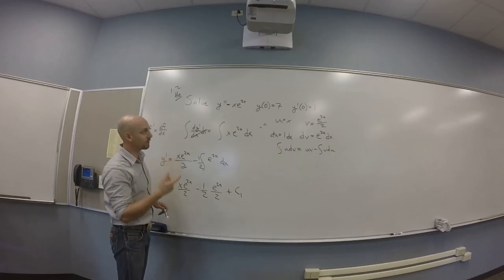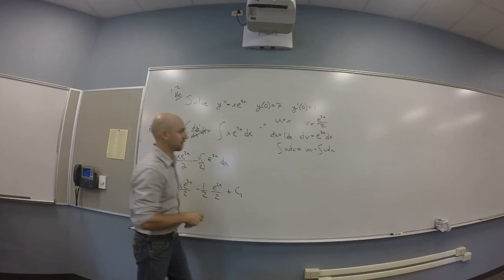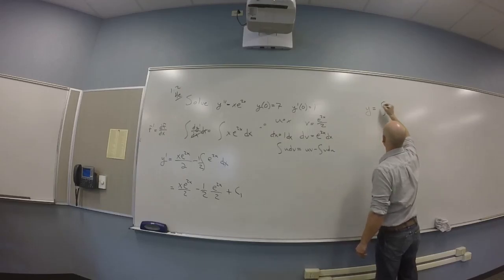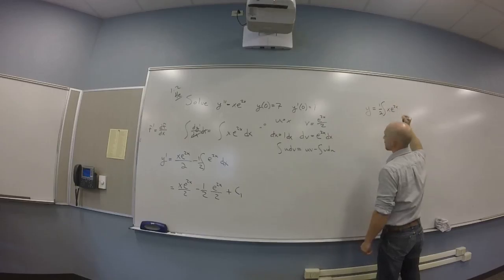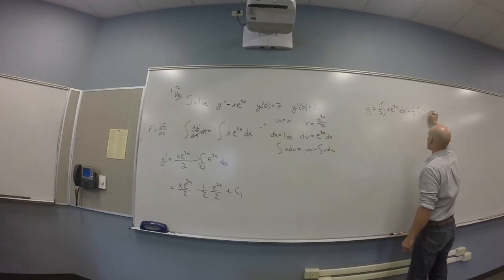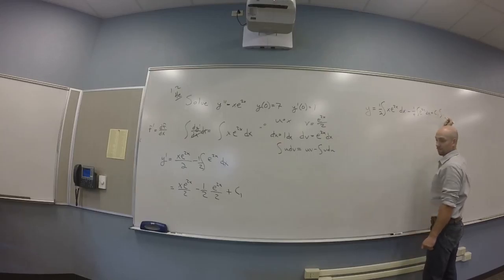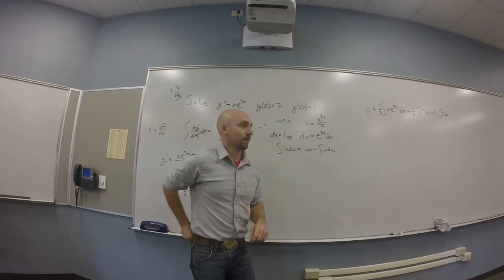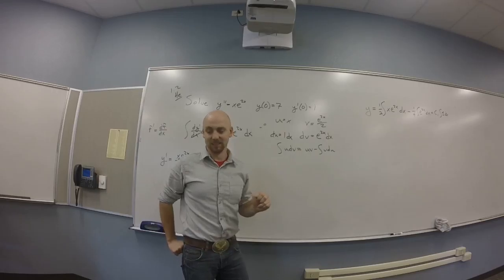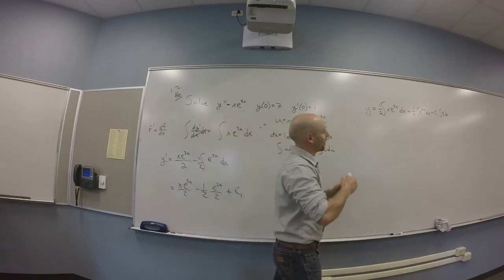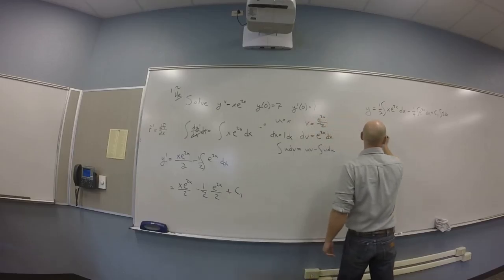So let me simplify a little bit. I think I got Xe to the 2X over 2. How do you do that one? Just take out the 1 half. Perfect. Take out the half. And then? Integrate. Yeah. Do you use substitution again? Or notice that's something you integrated over there. Right? So, you get minus 1 over 2, what? 1 half. E to the 2X. E to the 2X over 2. Plus constant. I'm going to call that constant C1.